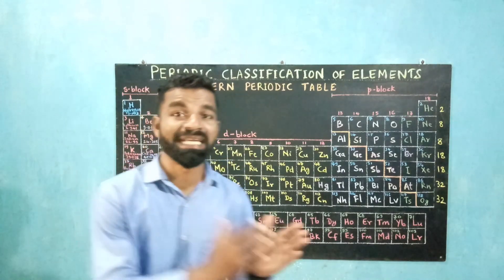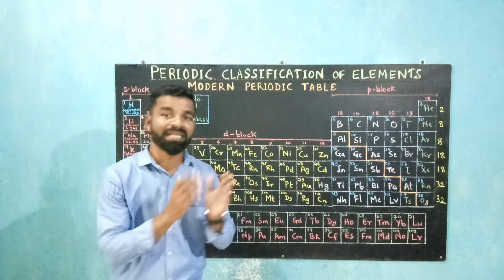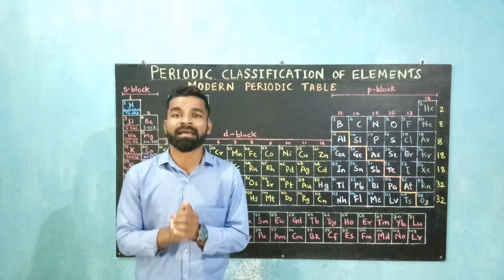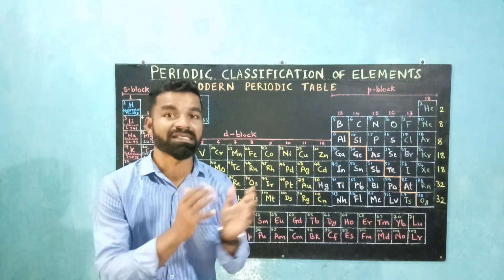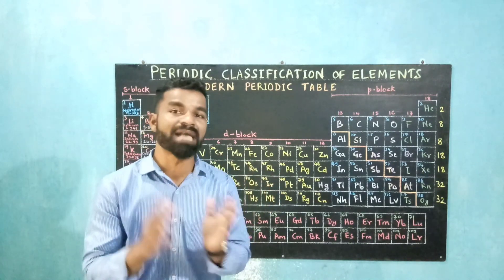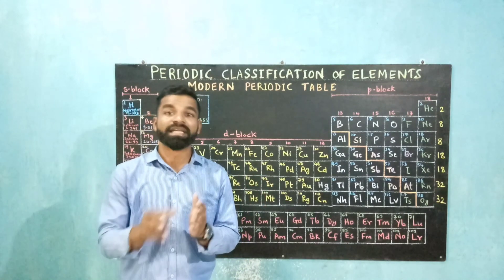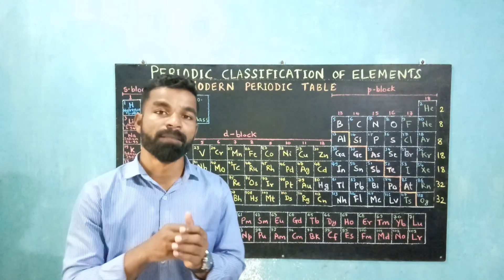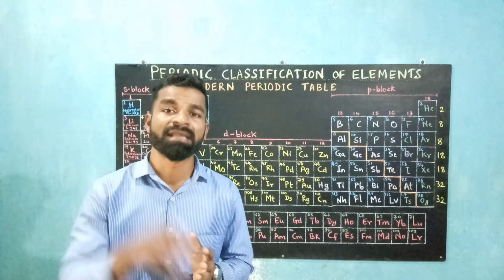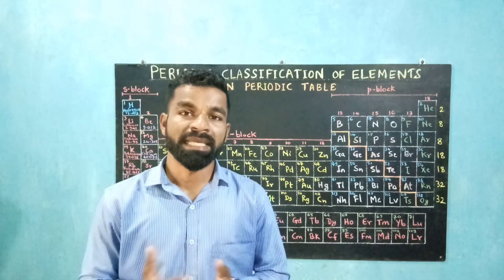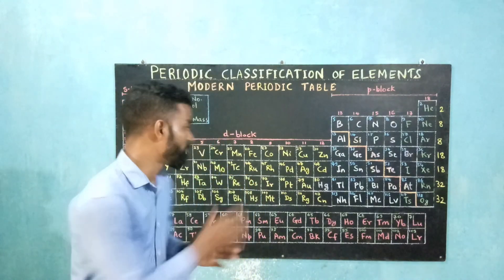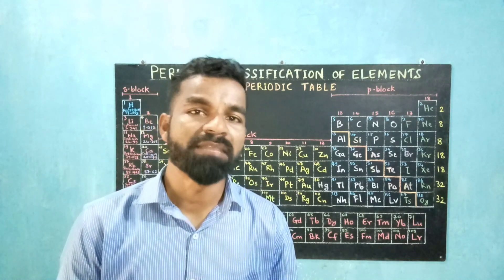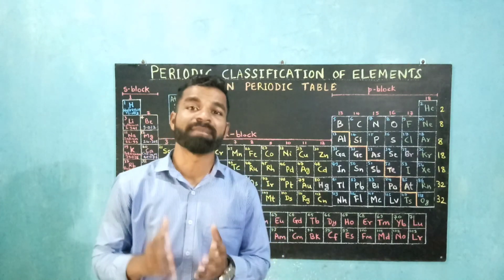If you compare the modern periodic table to Mendeleev's periodic table, many problems are solved. First, isotopes of an element had no place in Mendeleev's table because of different mass numbers, but since the modern periodic table is arranged by atomic number, isotopes of one element can be placed in one box as they share the same atomic number. Second, atomic number cannot be fractional — it increases by one integer from element to element — placing a limit on the number of elements; today all 118 elements have been discovered. Third, the position of cobalt and nickel is no longer a problem.